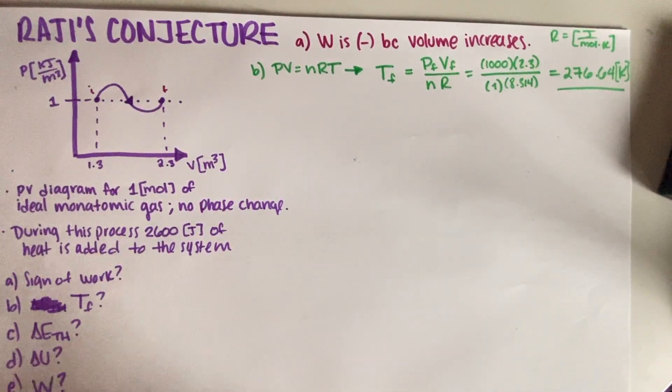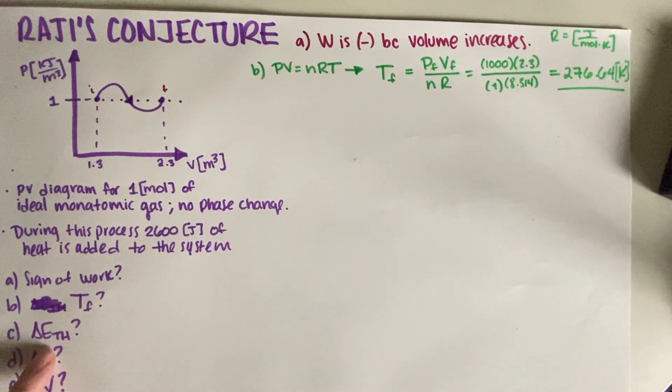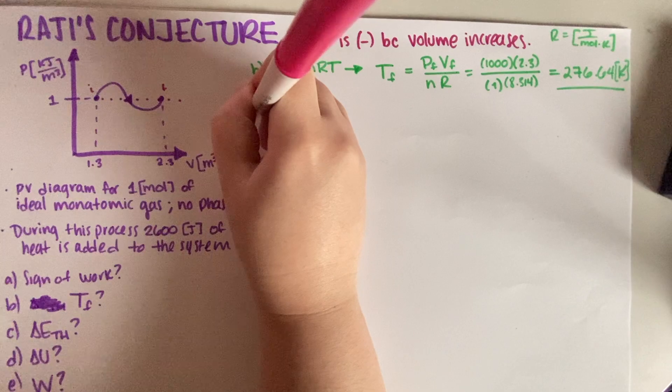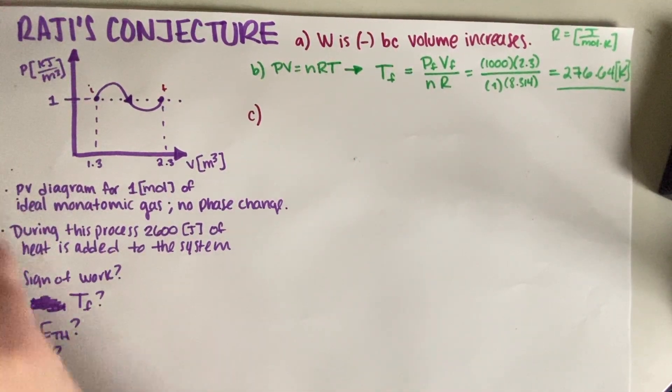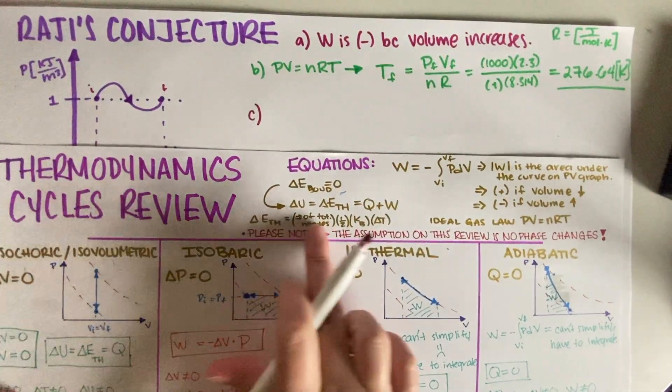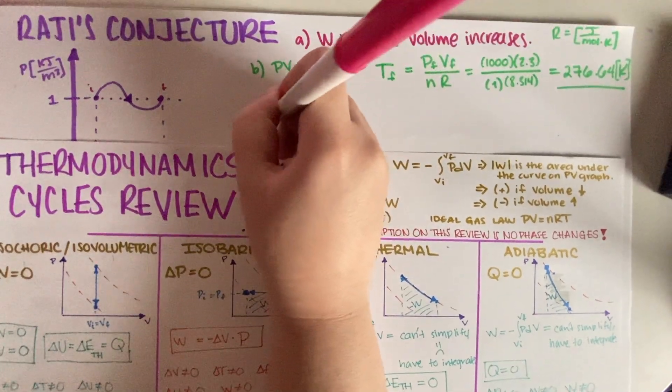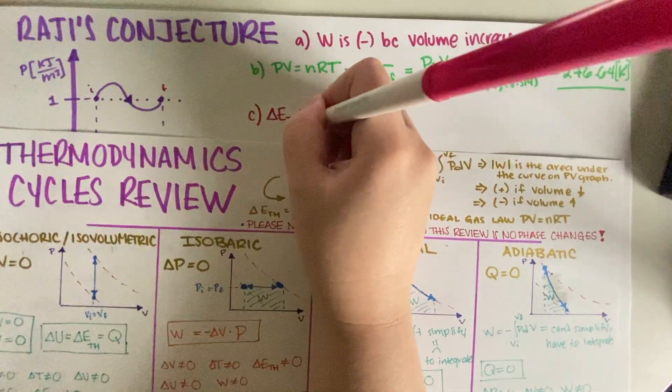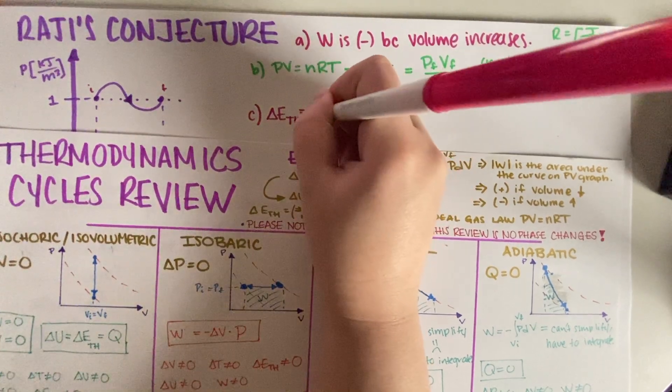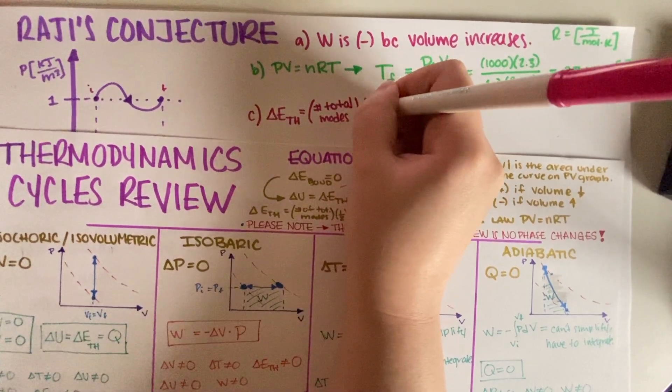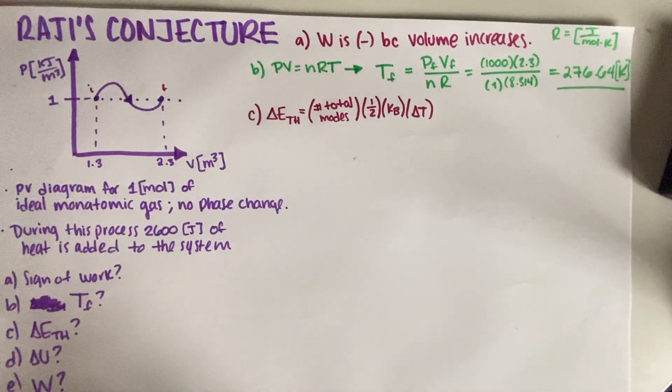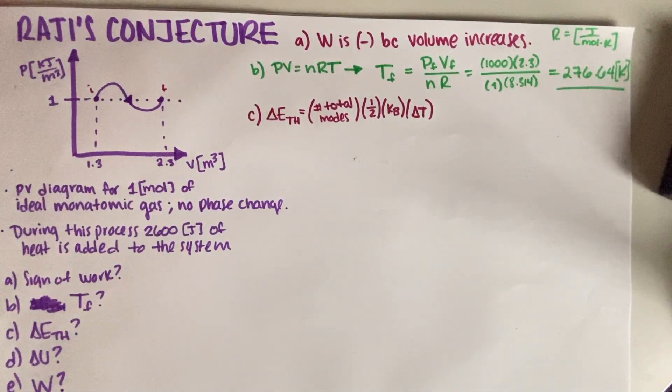All right, so now, we move on to part C. So, part C is asking us for change in E thermal. Okay, so change in E thermal. So, we need to go to our definition. So, change in E thermal. And I'm going to copy this equation right here. So, this equation right here is equal to the total number of moles, one-half kV delta T, like this.